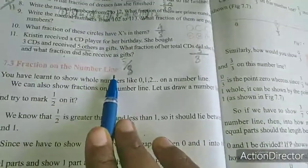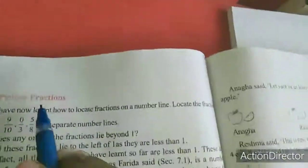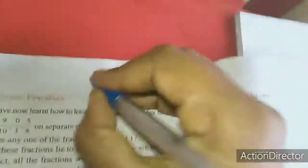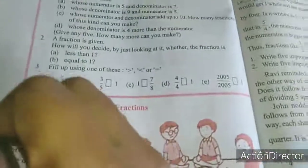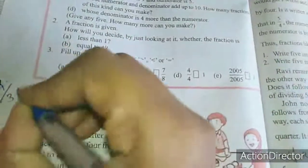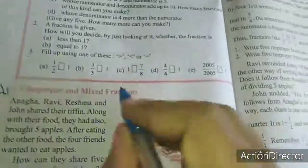See here — fractions on the number line. This is a proper fraction. Proper fraction is 3 by 4, where the numerator is lower than the denominator. Improper fraction is 4 by 3, where the numerator is higher than the denominator.